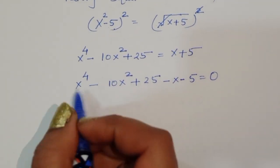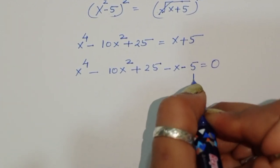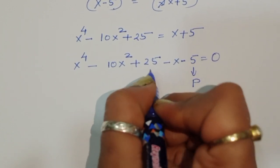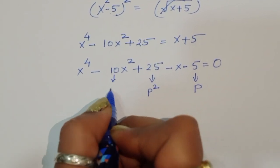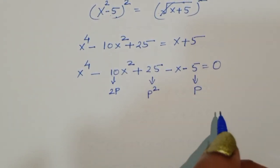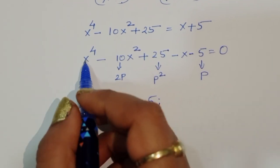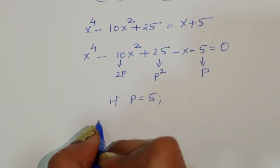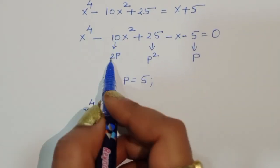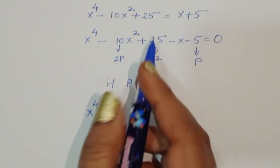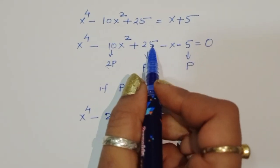Now let's consider that 5 = p. If p = 5, then 25 is p² and 10 is 2p. So we can rewrite this as x⁴ - 2p·x² + p².